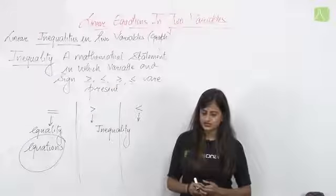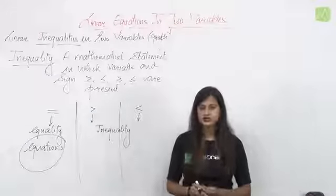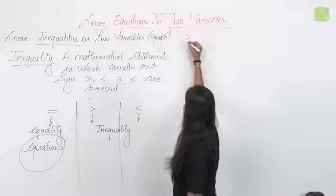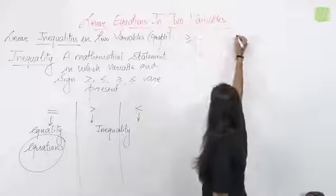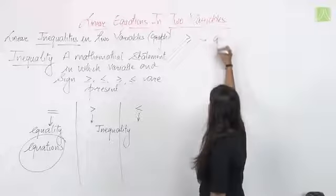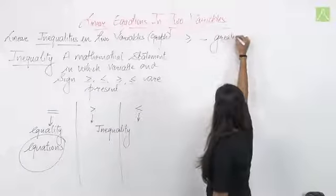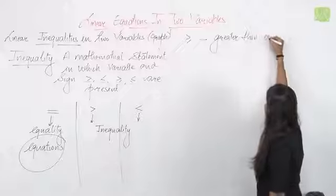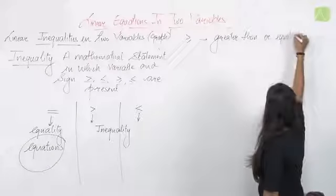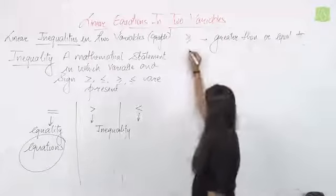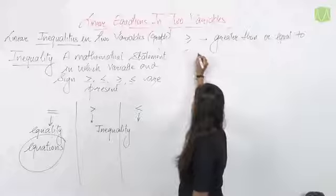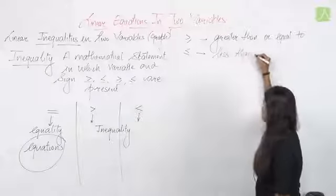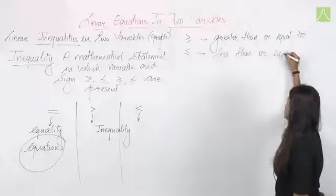In linear inequalities, we have greater than or less than signs. There are two more inequalities: greater than or equal to, and less than or equal to. Greater than or equal to means the quantity is either greater than or equal to the other. Less than or equal to means the quantity is either less than or equal.